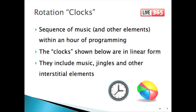In order to achieve the rotations we just saw, we need a clock. The name comes from the circular design of the clocks. It used to be that programmers would lay a 45 RPM record on a piece of paper and trace a circle around it. They ended up with a pie chart, with each slice being a programming element — a song, a DJ break, or some kind of interstitial element such as a jingle. What we're about to see is a clock in a linear form, also known as a music sequence.